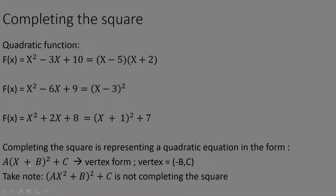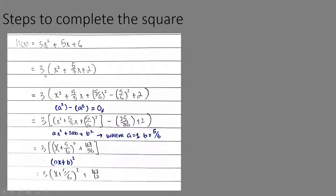Let's look at some steps to complete the square using an example: 3x squared plus 5x plus 6. Since x can only have a coefficient of one, you factorize 3 out, giving 3(x squared plus 5/3 x plus 2). Next, you take the coefficient of x, divide it by 2 to get 5/6, then add and subtract (5/6) squared.